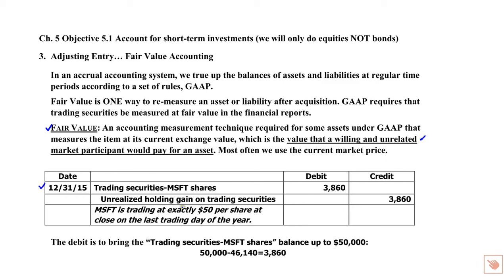Let's say it's trading at $50 a share. We bought it for $46,140. If we were going to sell it at $50 a share, we'd get $50,000 — meaning it has increased by $3,860. Assets are debits, so to increase an asset we debit it. We're going to debit trading security $3,860. The other portion goes into unrealized holding gain on trading securities, which will be part of net income.